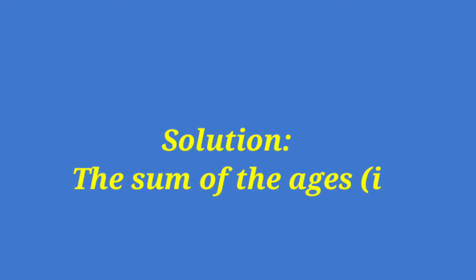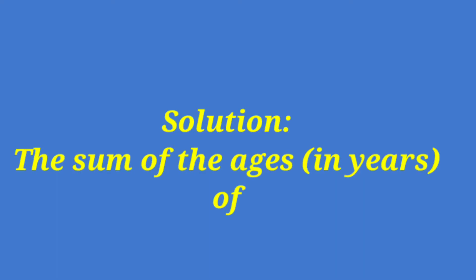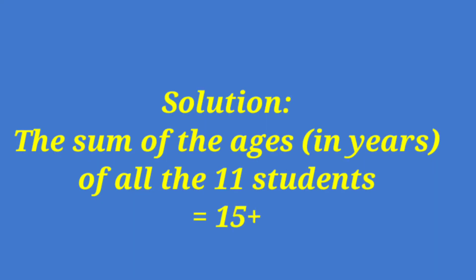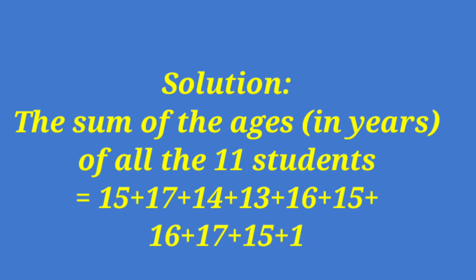Here is the solution. The sum of the ages in years of all 11 students equals 15 plus 17 plus 14 plus 13 plus 16 plus 15 plus 16 plus 17 plus 15 plus 13 plus 14, which equals 165. You must work this out on your own to reach this conclusion of 165.